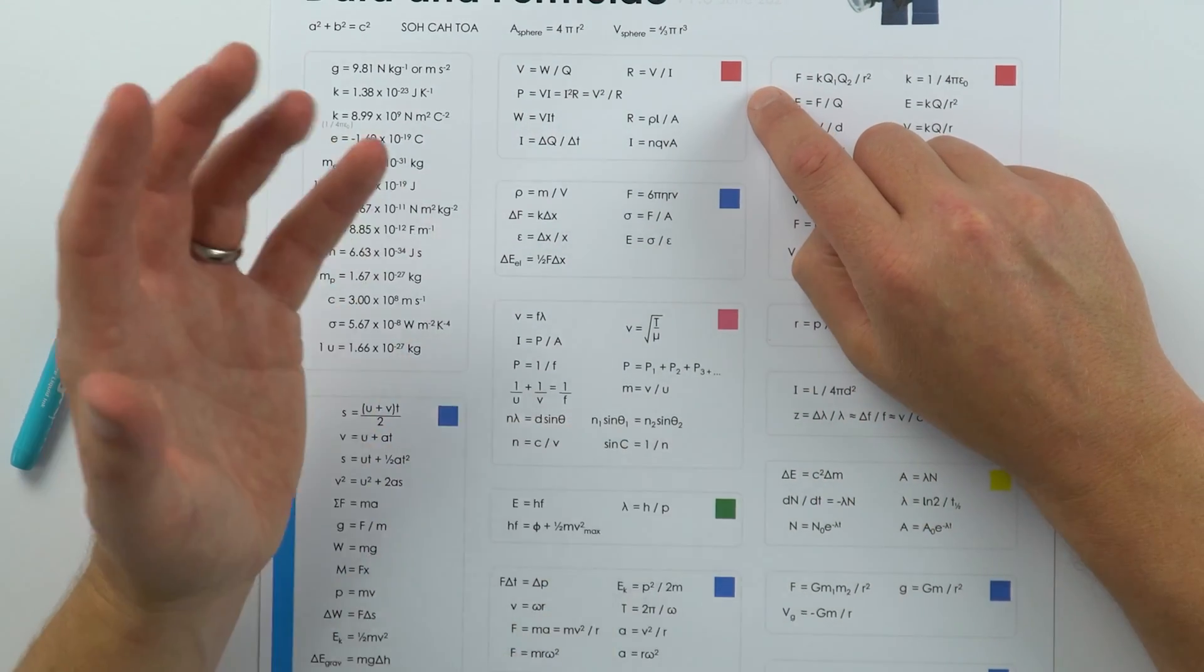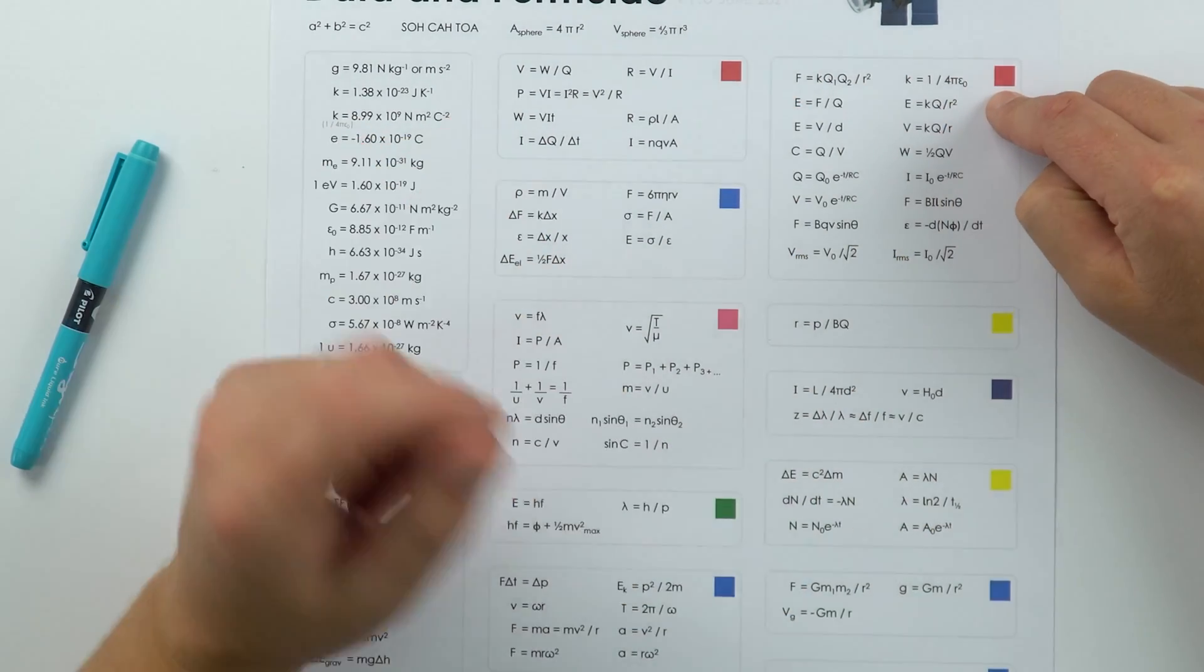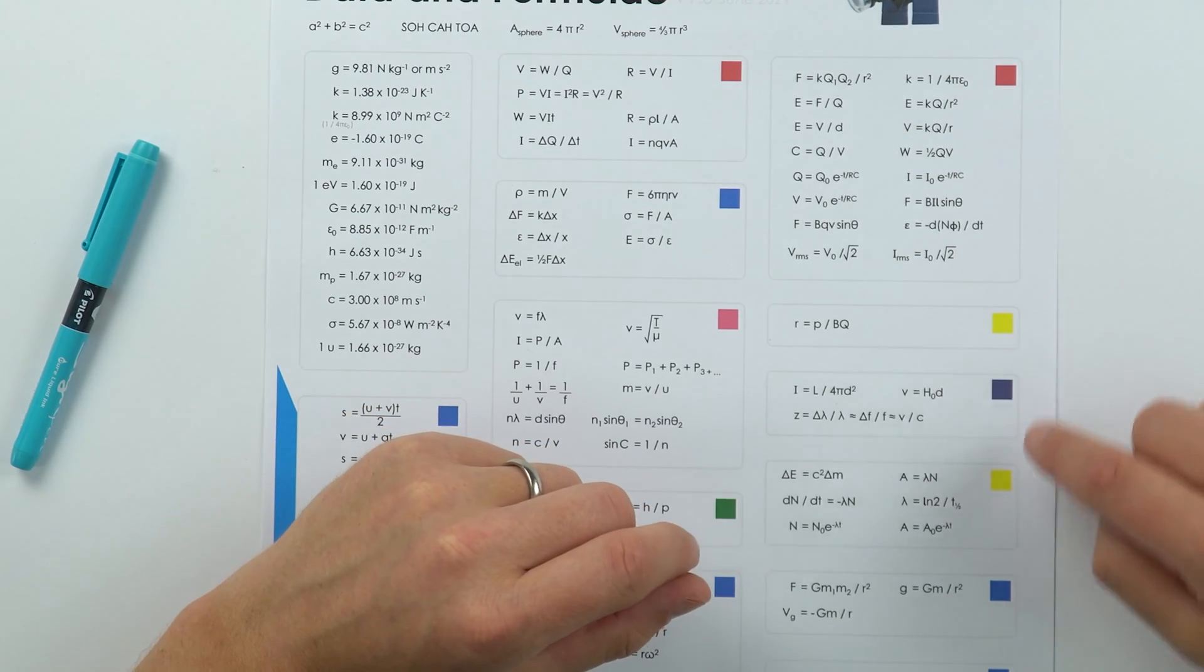Anything red is to do with electricity or electromagnetism, perhaps as you go into year 13. Anything which is yellow is to do with atomic physics and nuclear physics.